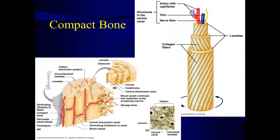Looking again at the long bone, we can see the diaphysis with a layer of compact bone making up the outer edge, covered by the periosteum, with spongy bone lining the medullary cavity. Compact bone is made up of repeated structures called osteons — they look like cylinders, and in cross-section you can see the ends of the cylinders. Osteons are the functional unit of compact bone; compact bone is typically made up of repeated osteons cemented together to form this very dense structure.